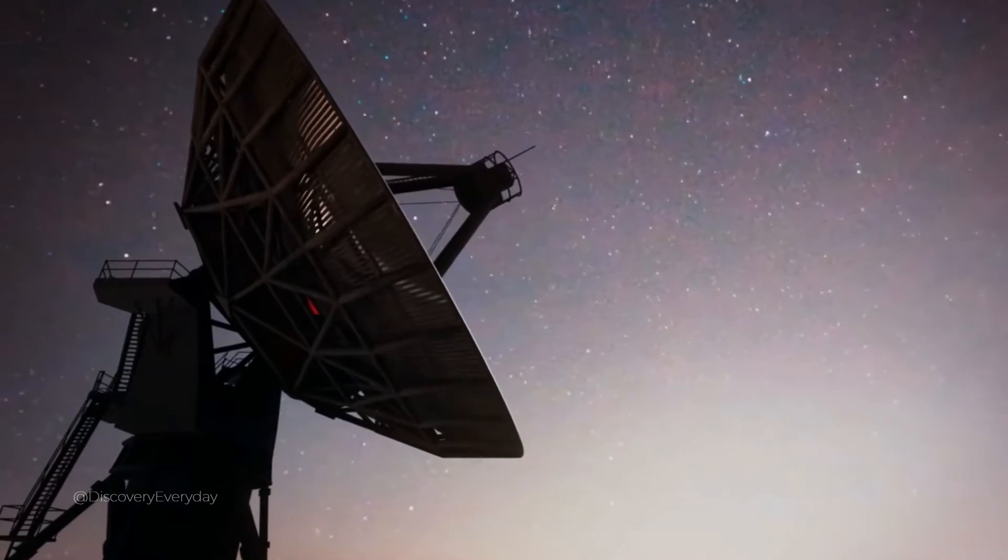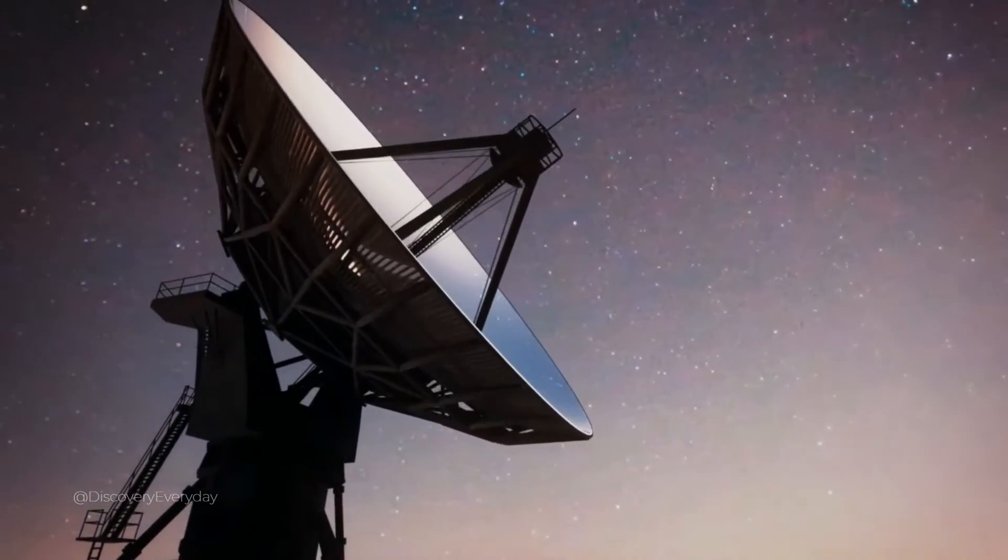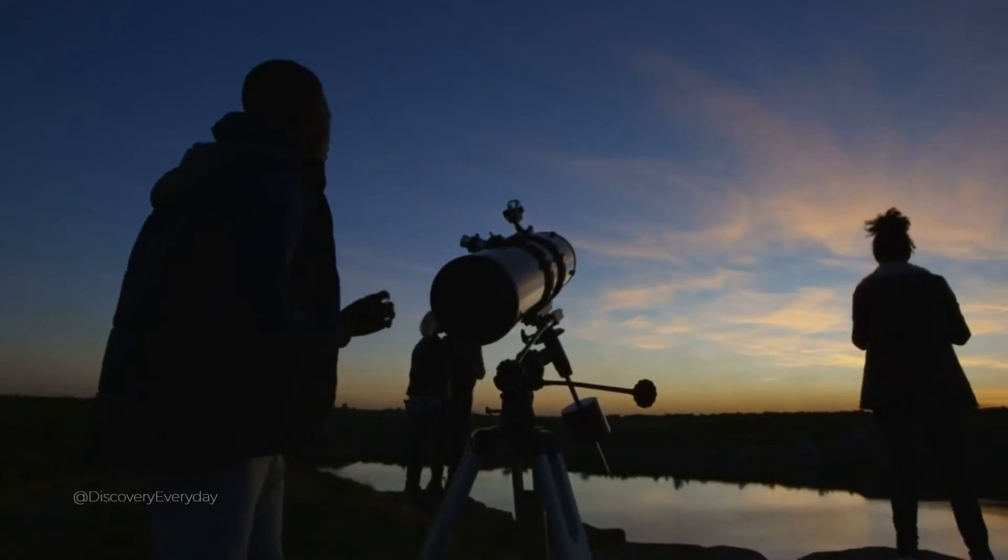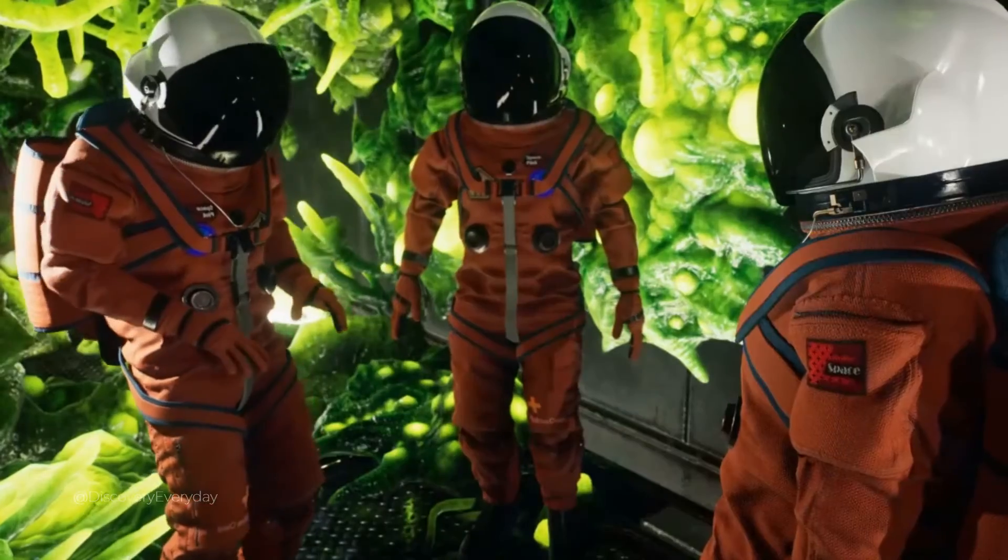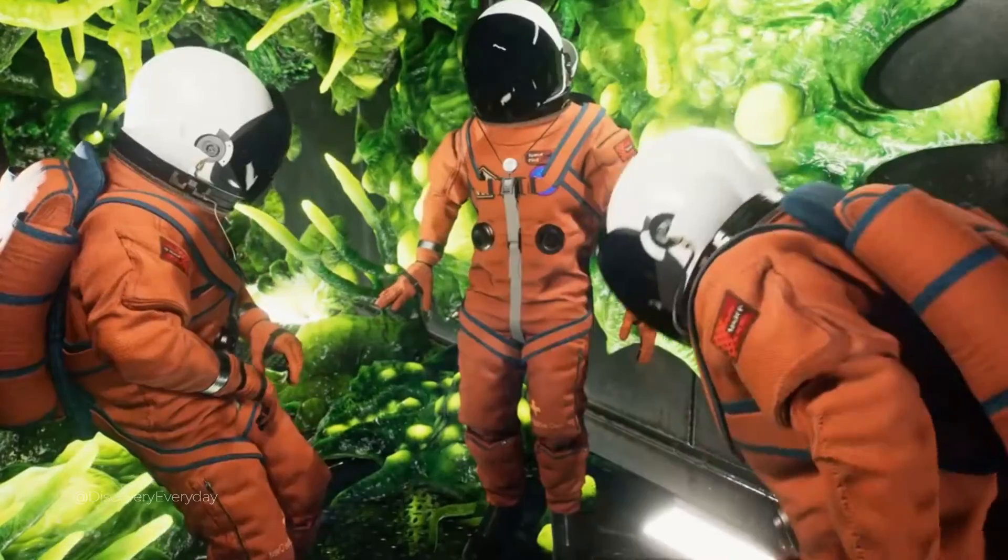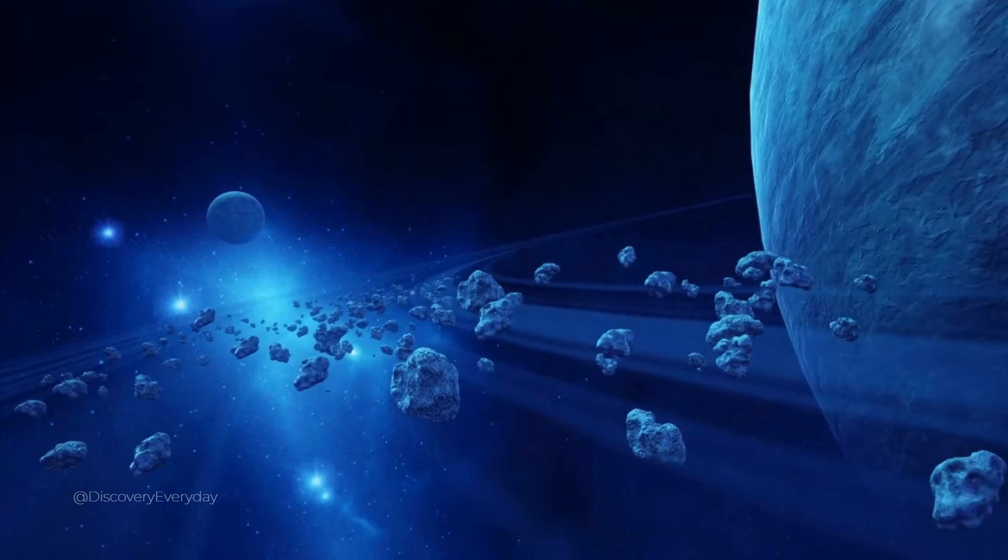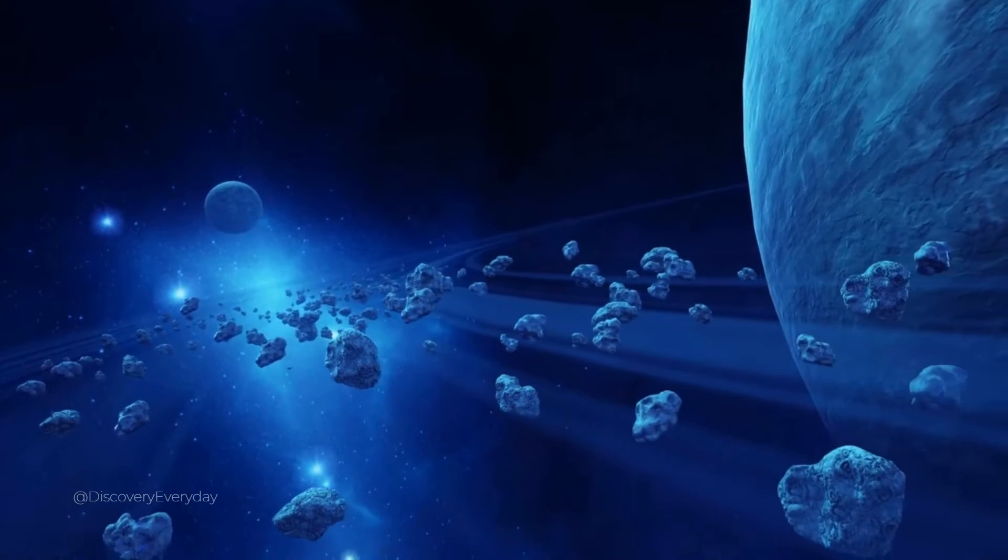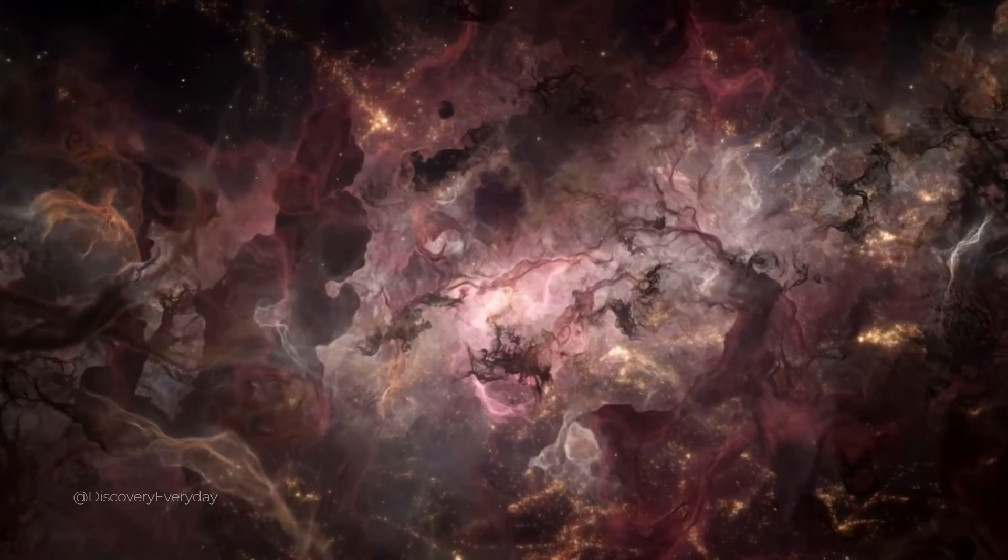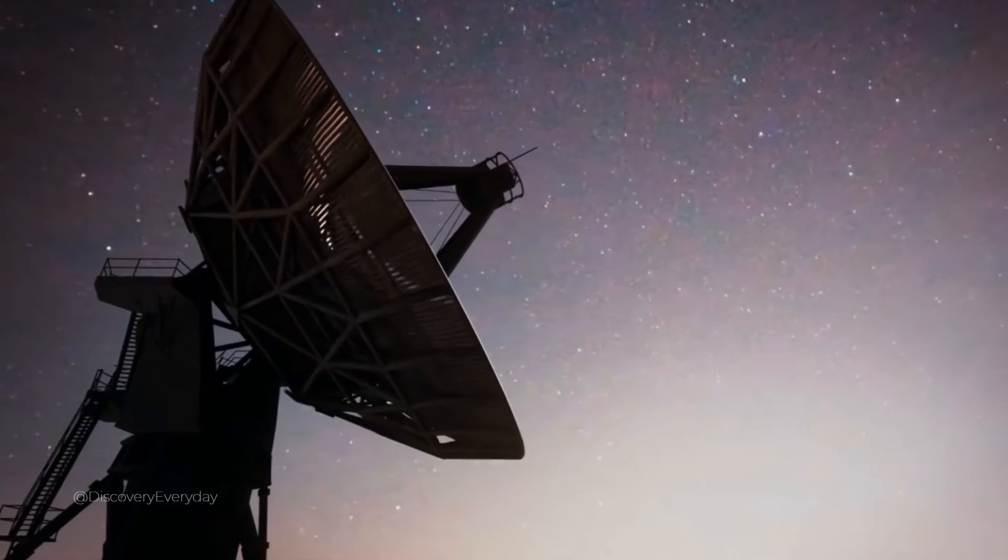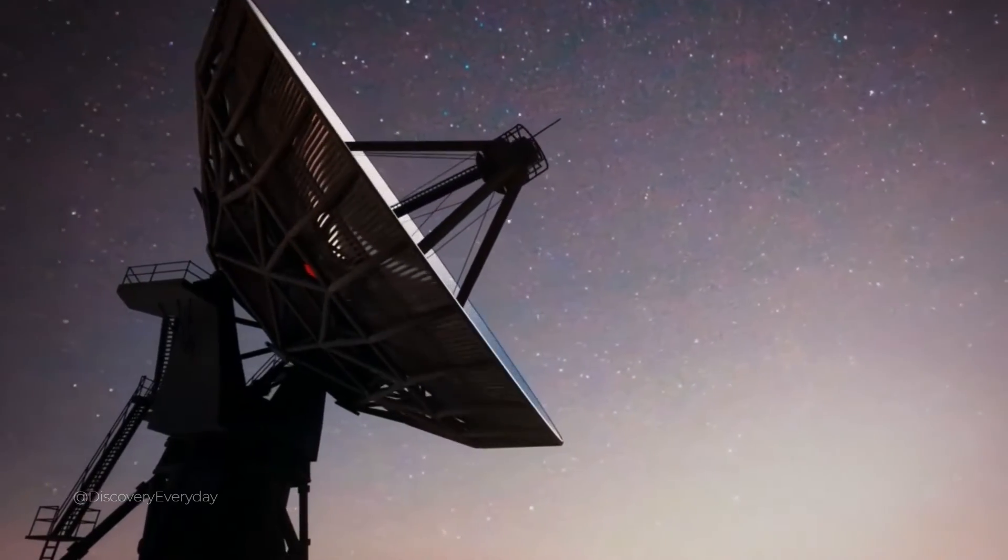Number 5: WOW Signal Origins. On August 15, 1977, astronomer Jerry Emin detected a powerful, brief, and unique radio signal using Ohio State University's Big Ear Radio Telescope. A signal that has never been repeated or detected again. It was tightly constrained to a narrow band of radio frequencies, something nature doesn't usually do. It also wasn't a broadcast from Earth or a passing satellite. It was something else, something special, and it lasted 72 seconds.